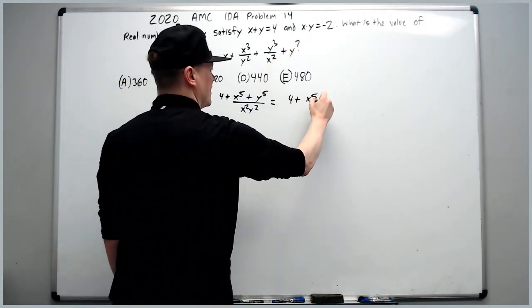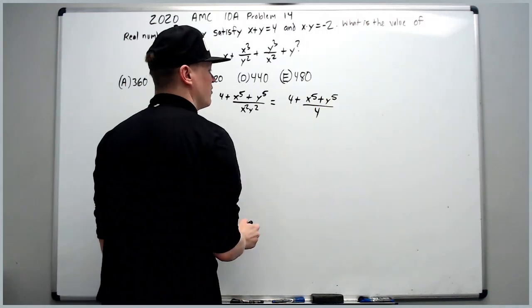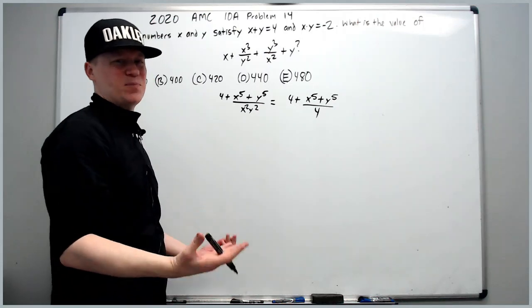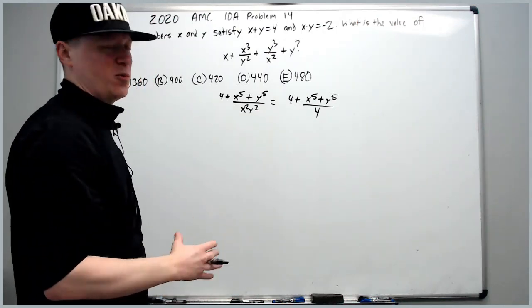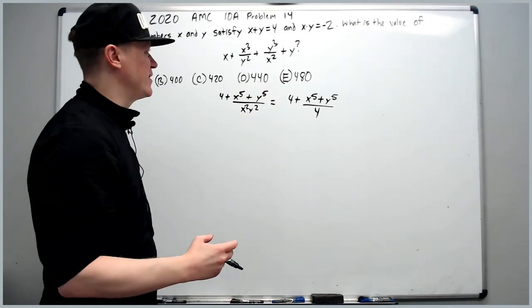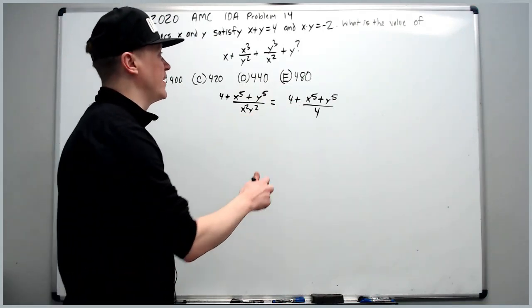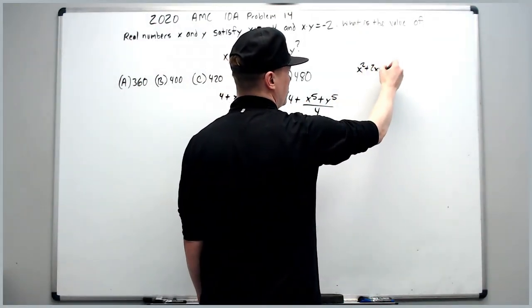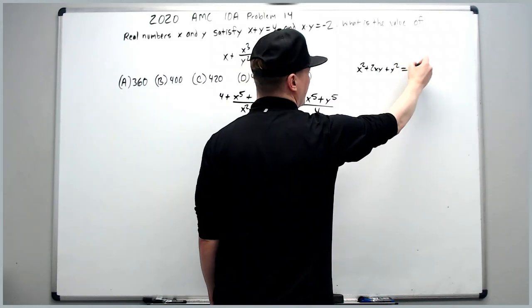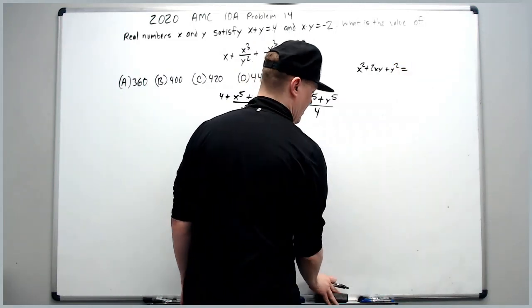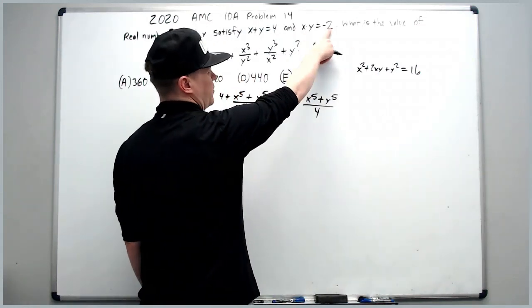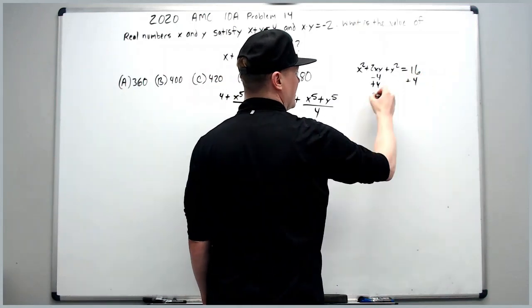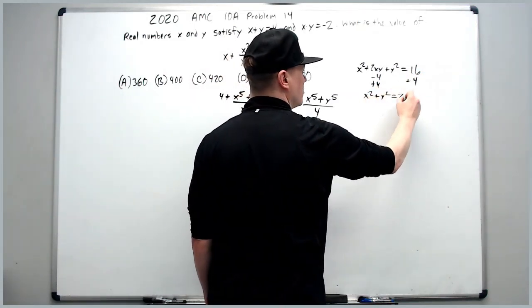All we need now is x to the fifth plus y to the fifth. We start with x plus y equals 4 and square it: x squared plus 2xy plus y squared equals 16. Substituting xy equals negative 2 gives negative 4, and adding 4 to both sides gives x squared plus y squared equals 20.